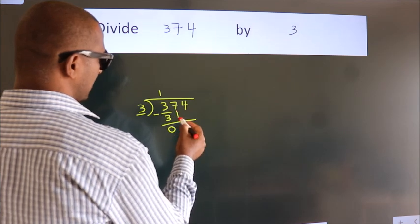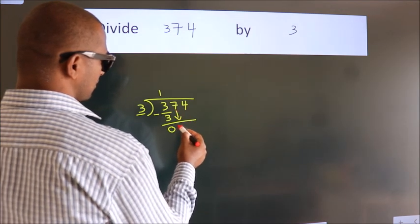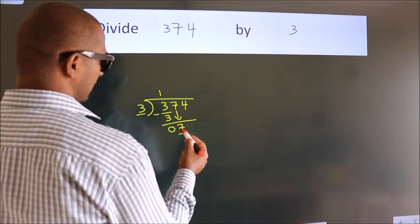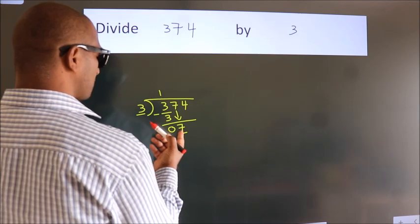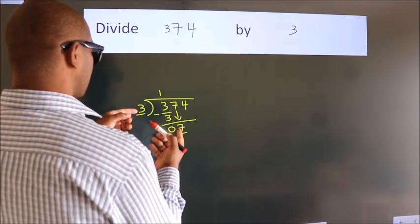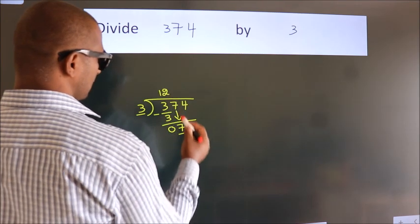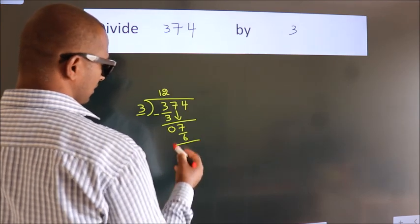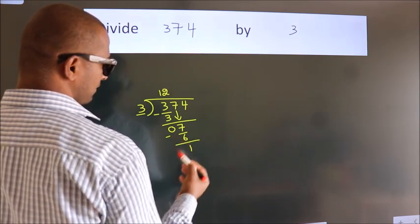After this, bring down the beside number. So, 7 down. So, 7. A number close to 7 in 3 table is 3, 2's, 6. Now, we subtract. We get 1.